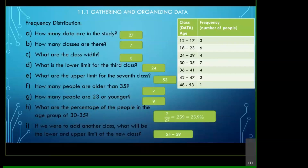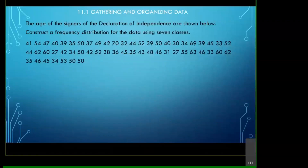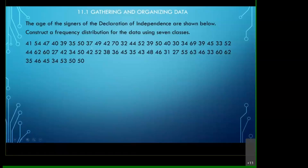Now, what if they give you the raw data and ask you to build a frequency distribution table? This is just a raw bunch of numbers. We need to gather and organize the data. If you gave this unorganized data to your boss, you'd probably have to find a new job, because they wouldn't know what they're looking at.